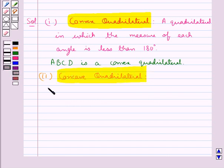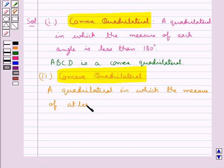This is a quadrilateral in which the measure of at least one of the angles is more than 180 degrees.